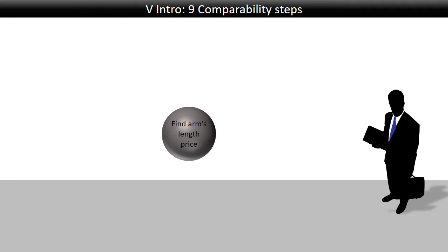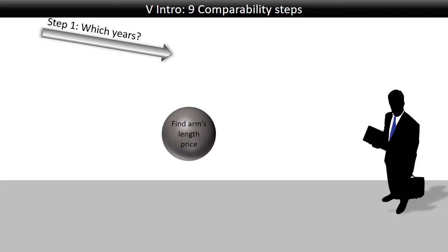Let us look at what the nine comparability steps are that one needs to fulfill to find the right arm's length price under a comparability analysis. The first step is very simple: you need to look at which years you're trying to price. That is a one-time affair, and then you know where you are. But the rest of the process is circular, in the sense that you do the different steps, but it might be that the conclusion from one step forces you to go back to another, or a lack of data forces you to take another path and redo other steps.